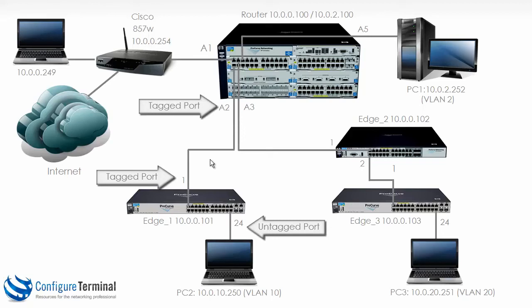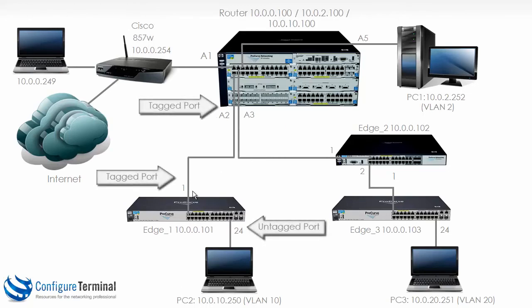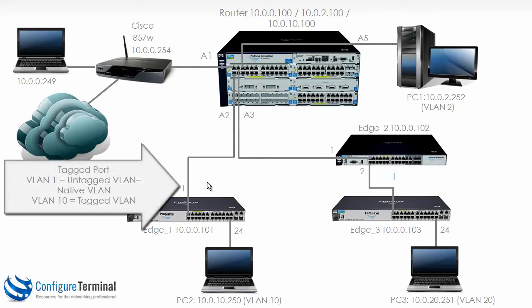We can get away with leaving VLAN 1 as untagged, or you could configure VLAN 1 as tagged — it's up to you. To do that we need to enable tagging on port 1 of Edge 1 and port A2 on the 5406. VLAN 1 can remain untagged on this link, but VLAN 10 needs to be tagged to allow the two switches to communicate the additional VLAN. So port 1 will have VLAN 1 untagged, and the 5406 will have port A2 untagged, but VLAN 10 will be tagged on both of these ports. VLAN 1 is known as the native VLAN or untagged VLAN on this link.